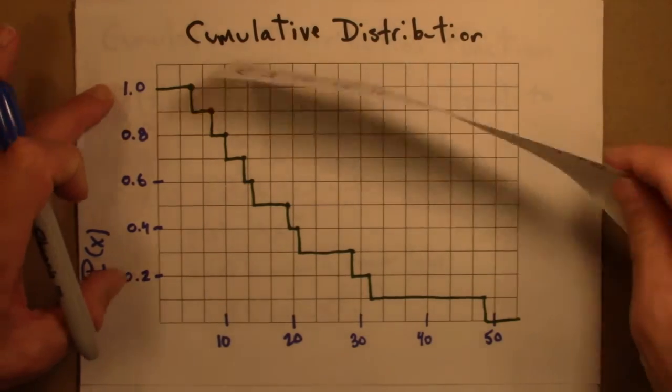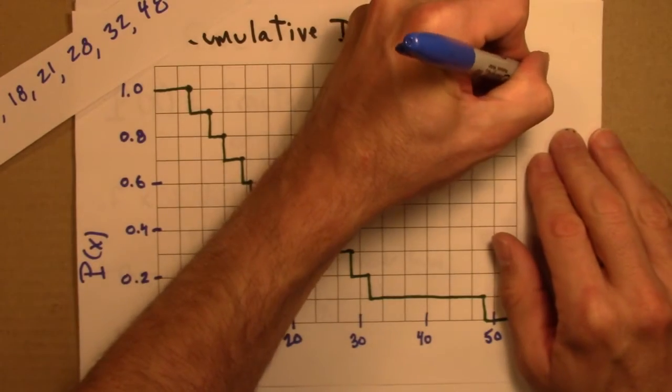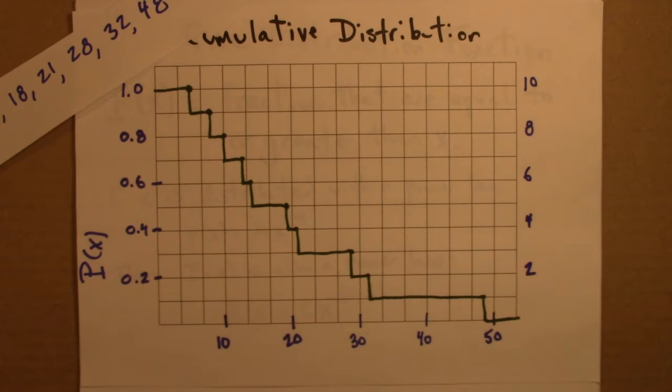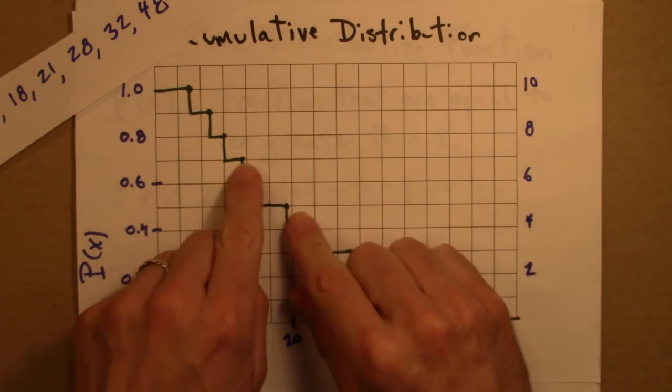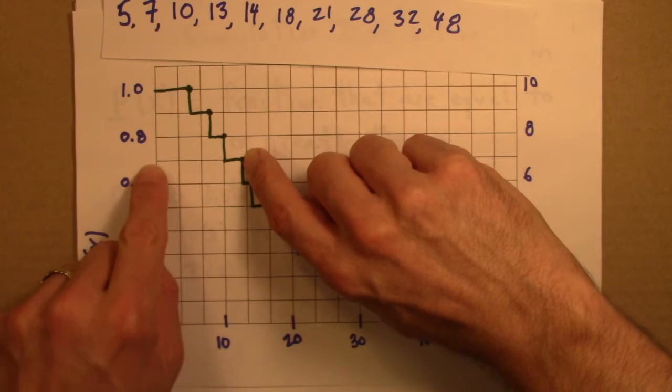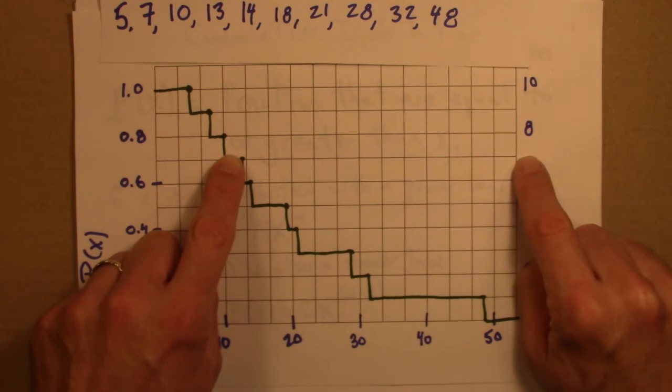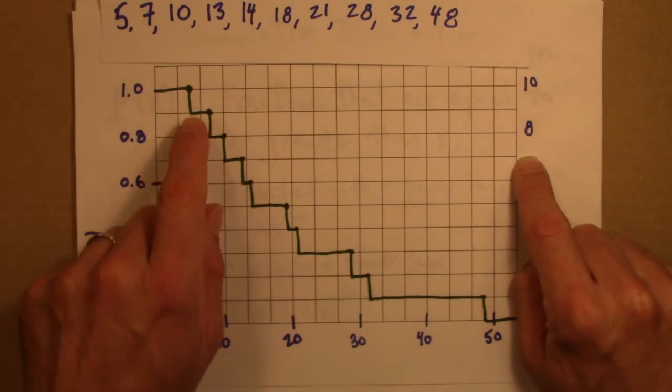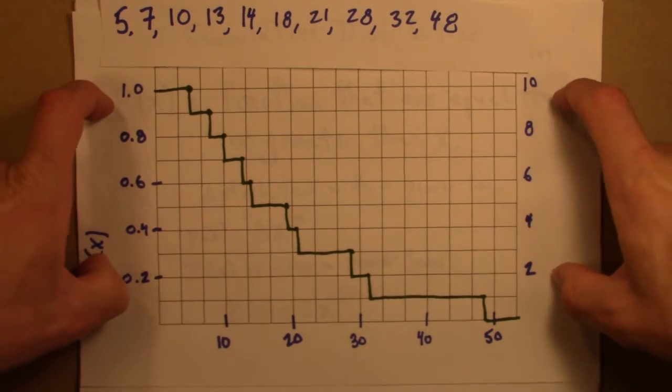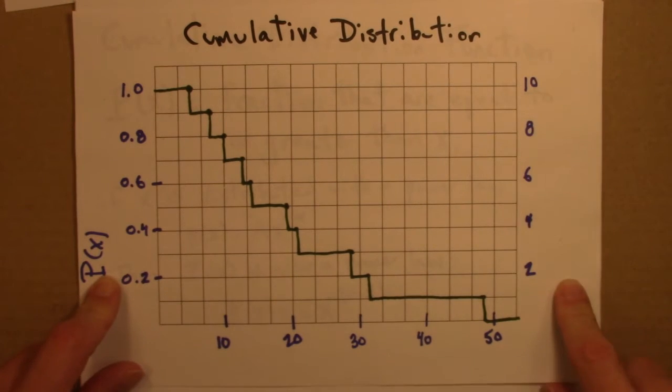We could also think of this in terms of raw numbers. And if I did that, well then I would just multiply these fractions by my number of data points. And I could label like this. So then, say this point again for 13, I could think that 70% of my data is 13 or larger. Or I could read over here and say there are 7 points in my data set that are 13 or larger. So one can use either fractions or raw numbers. And in practice one will see both often, but this is a pretty common way of doing it.